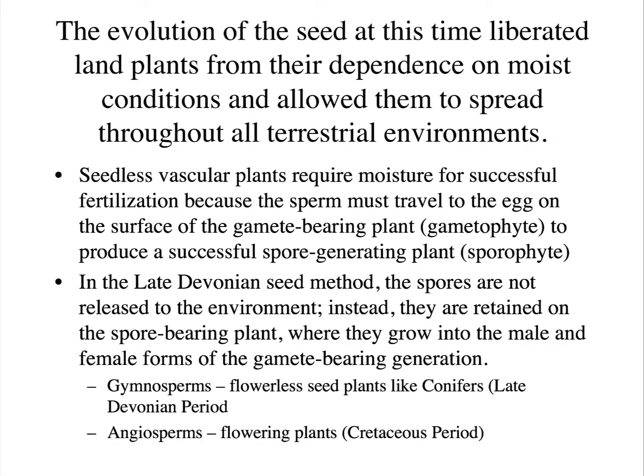The evolution of the seed liberated plants from their dependence on moist conditions and allowed them to spread throughout all terrestrial environments. Seedless vascular plants require moisture for fertilization because the sperm must travel to the egg on the surface of the gamete-bearing plant — the gametophyte — which produces the adult plant. Whereas with the seed method developed in the late Devonian, the spores are not released to the environment; instead they are retained on the spore-bearing plant, where they grow into male and female forms of the gamete-bearing generation.